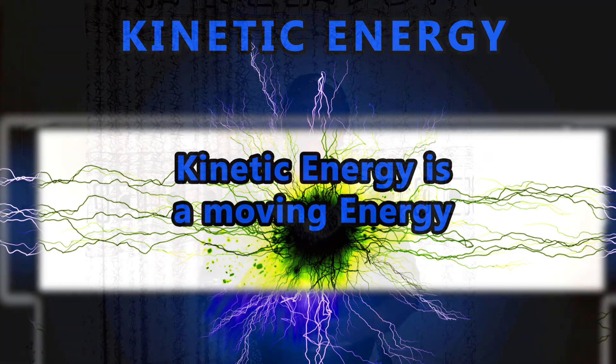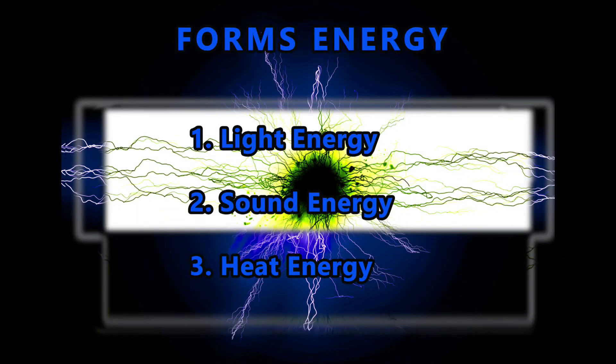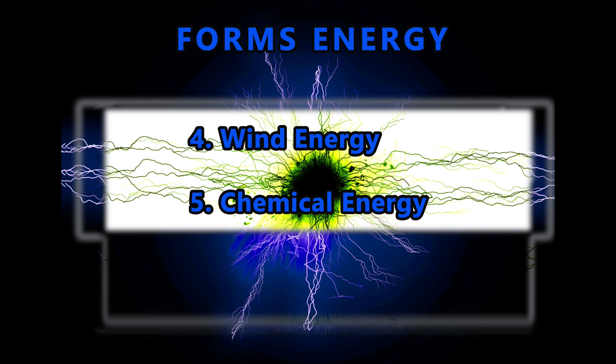A kicked ball possesses kinetic energy because of its motion. Now let's look at the forms of energy. There are different forms of energy which include: number one, light energy; number two, sound energy; number three, heat energy; number four, wind energy; and number five, chemical energy.